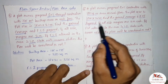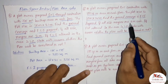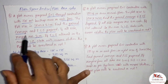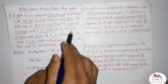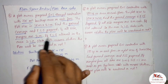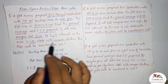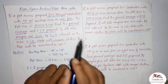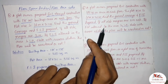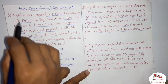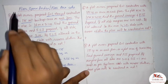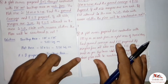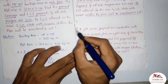The rest of the question is the same — find ground coverage and FSI proposed if all side margins are 2 meter each, and state with reason whether the plan will be sanctioned or not. It is exactly the same as problem four; only the values have changed.